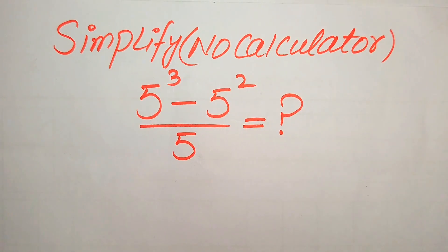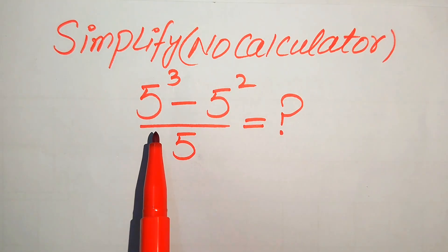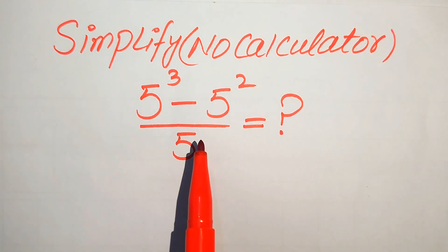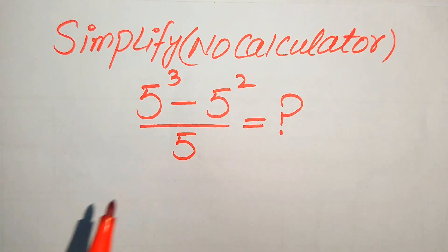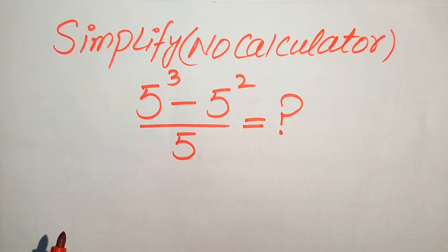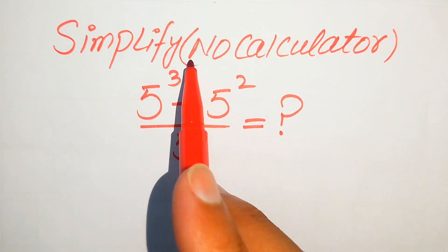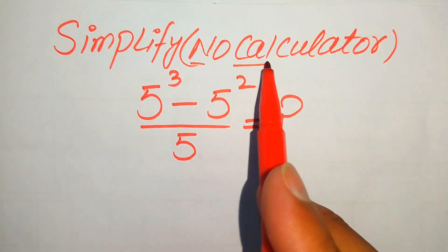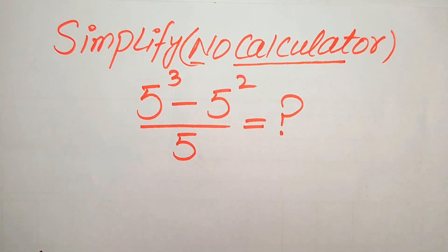Hello everyone. How to simplify this algebraic expression: 5 cubed minus 5 squared, divided by 5, and write this into simplified form. Remember, a calculator is not allowed in this problem, which means we need to show all of the working on paper.